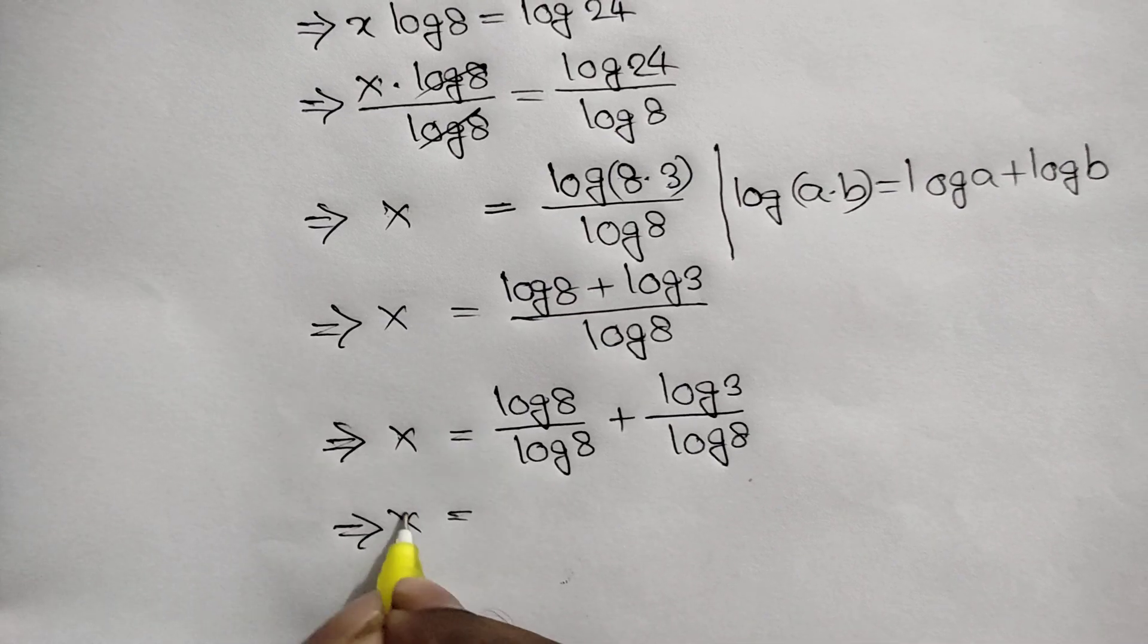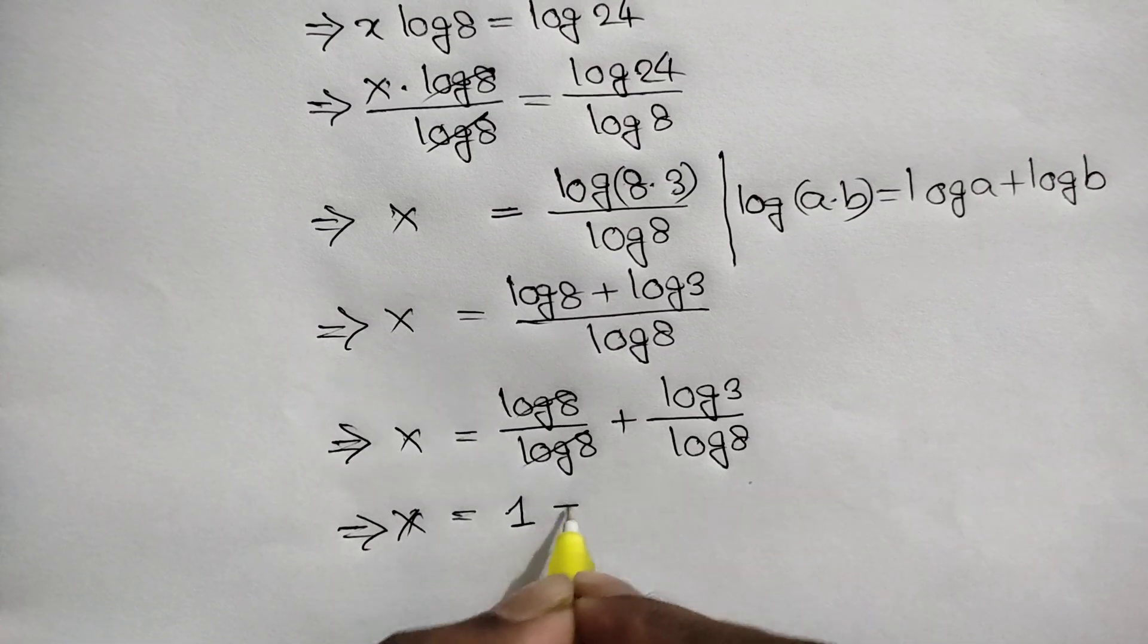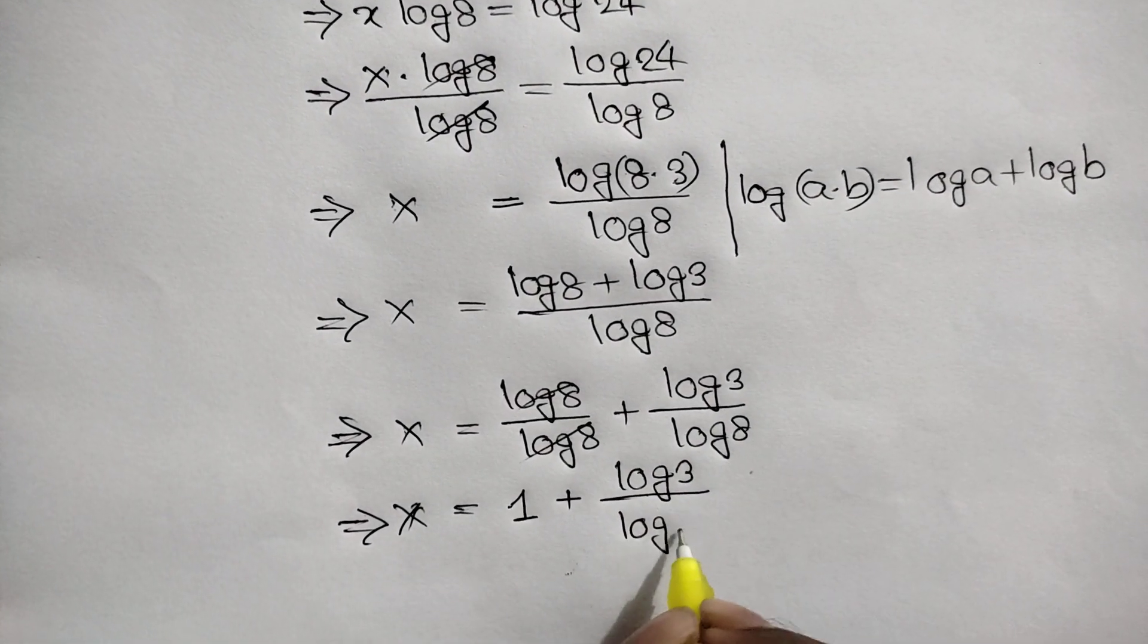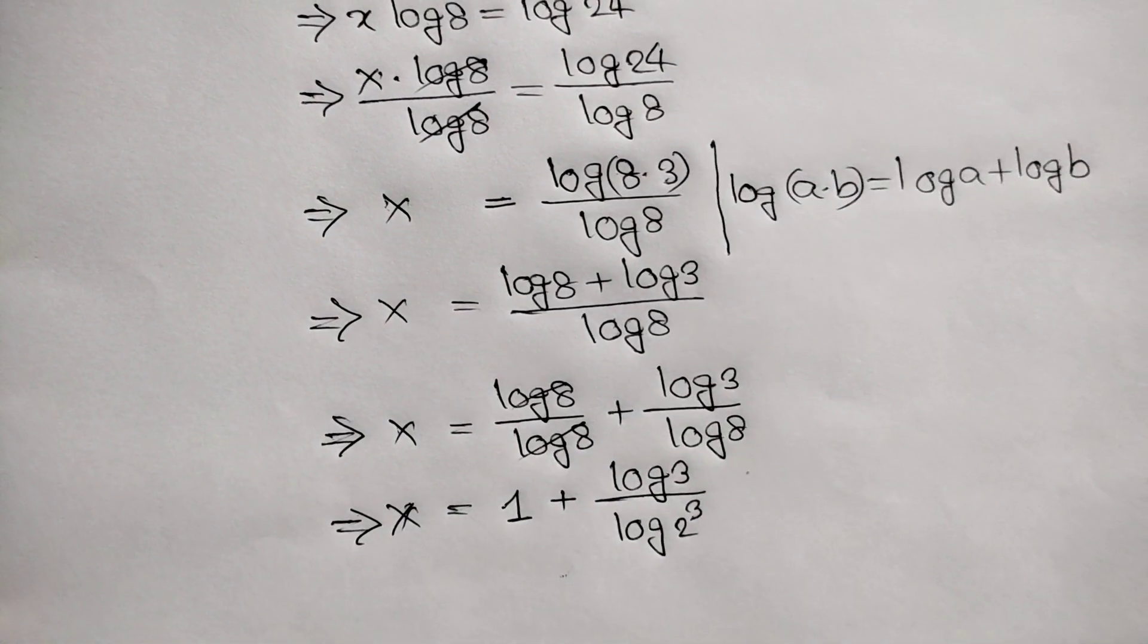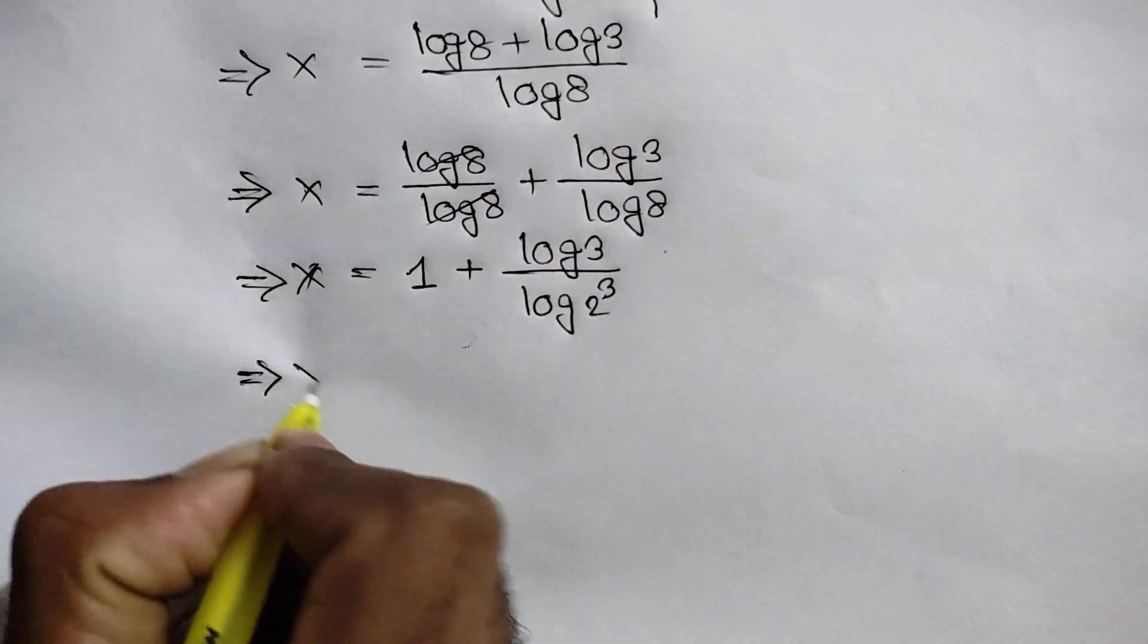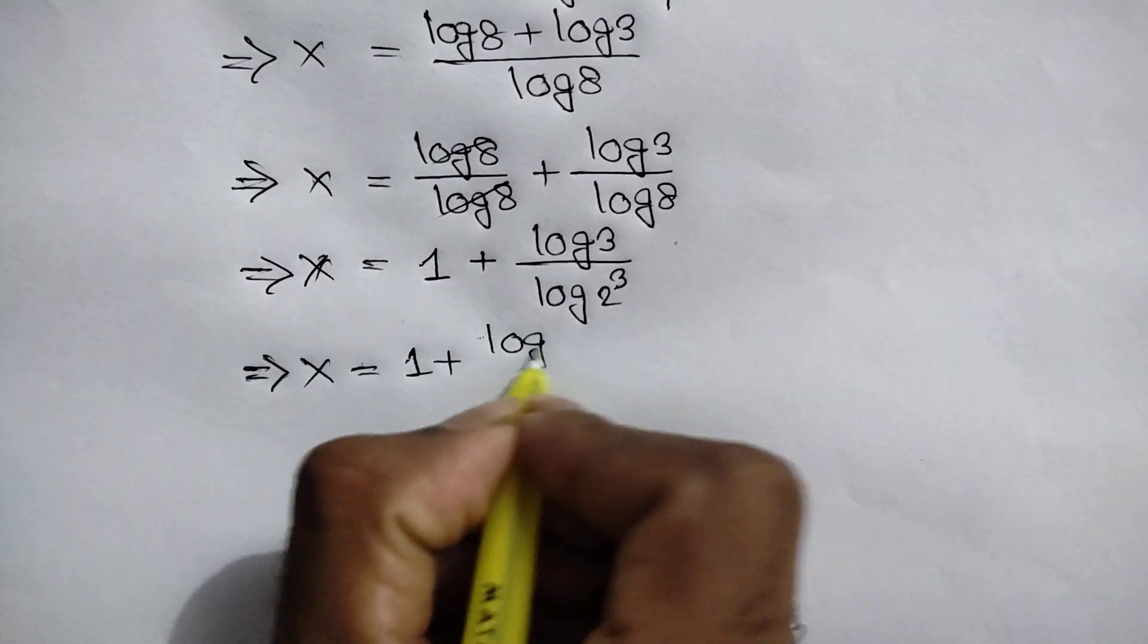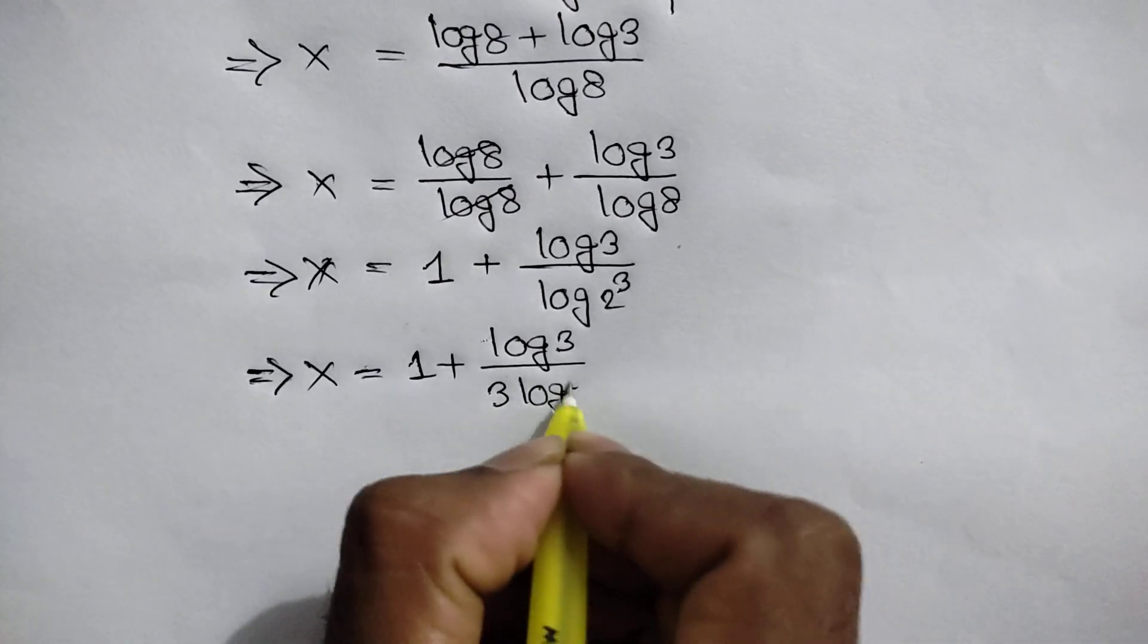This log 8 cancels out this log 8, so it's remaining 1 plus log 3 over log 8. Here we can write log 2^3 because 2^3 is the same as 8. So we can write x equals 1 plus log 3 over 3 log 2.